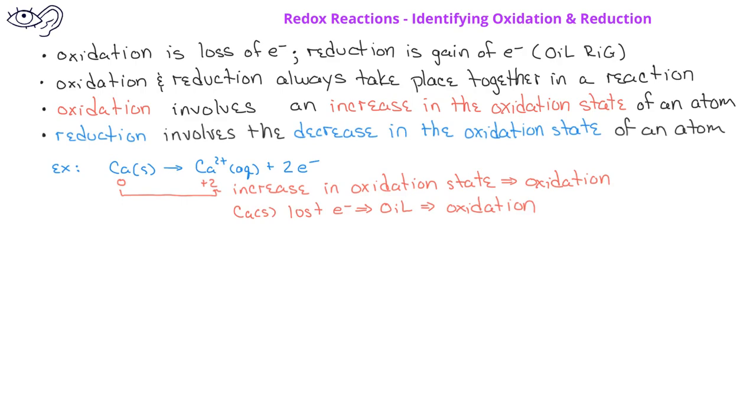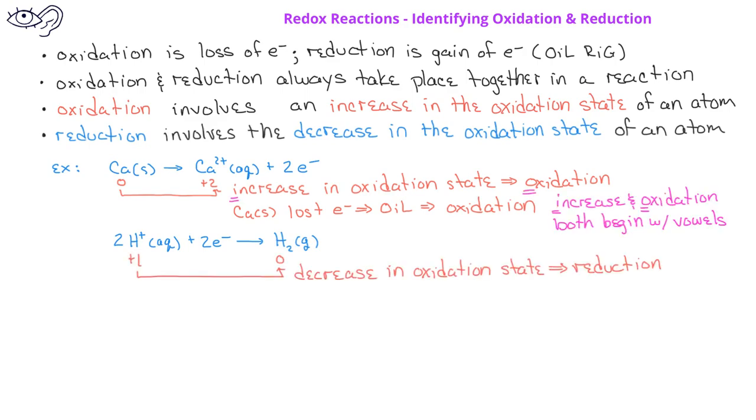If we have the reaction 2 hydrogen ions plus 2 electrons produces hydrogen gas, we see that the hydrogen ions experience a decrease in oxidation state, which means they underwent reduction. On the other hand, we could also say that the hydrogen ions gained electrons. Since reduction is gain, we know the hydrogen ions underwent reduction.